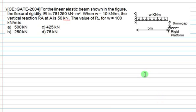For the linear elastic beam shown in the figure, EI is 781250 kN·m². UDL is 10 kN/m. The vertical reaction at A is 50 kN. What is the value of RA for W equals to 100 kN/m?